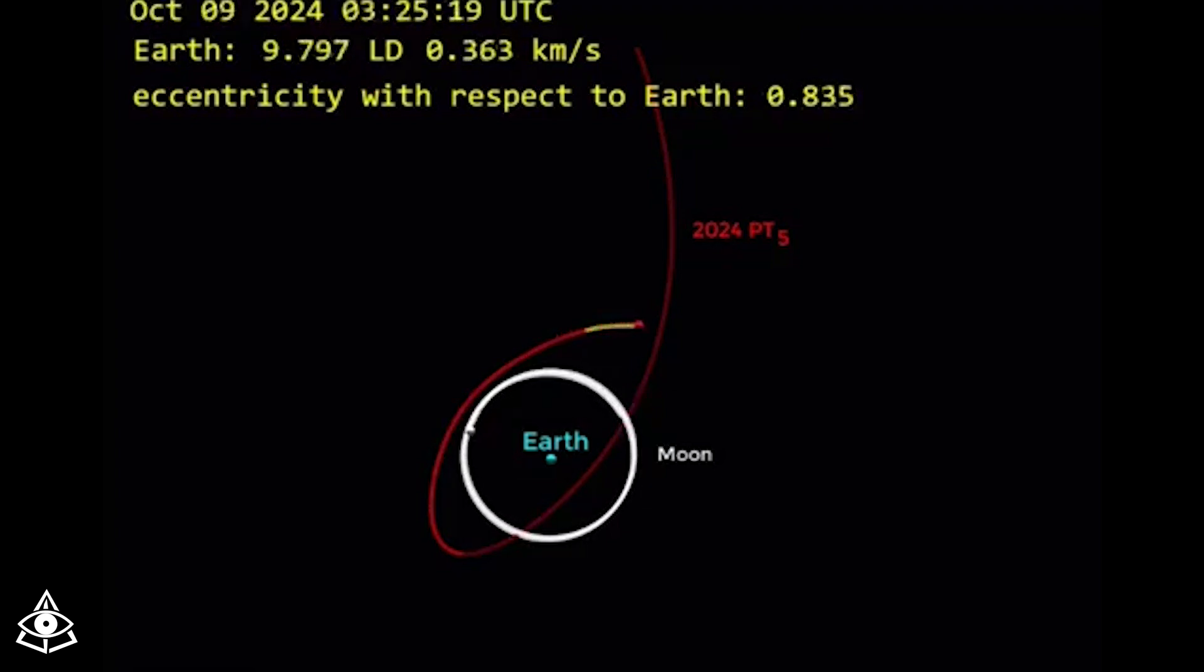In addition, experts also mention that this asteroid will not complete an orbit around the Earth, but that its trajectory will follow a horseshoe-shaped curve.